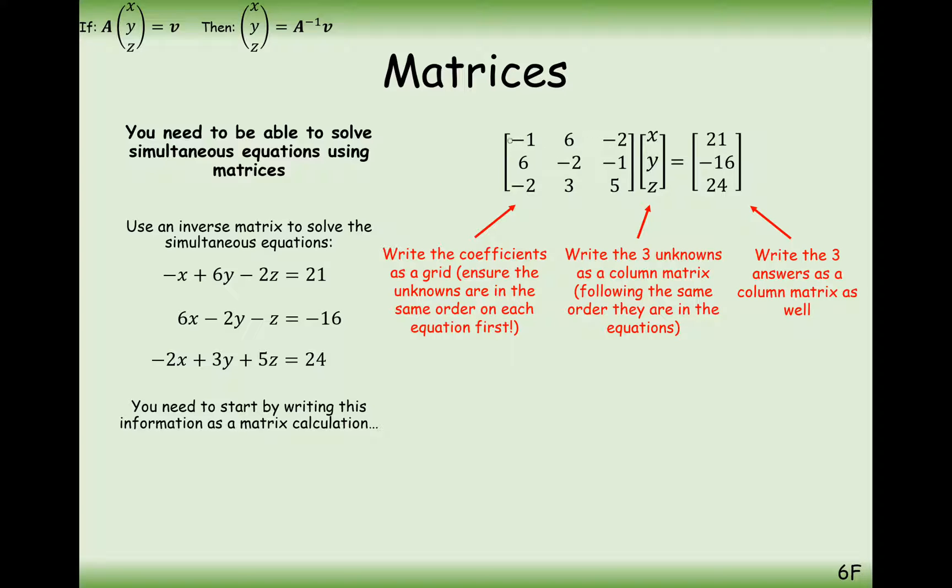Where did this matrix come from? Well, if you see, if we times the top row here by this first column here, what will come out is exactly this equation here: minus x, add 6 times y, add minus 2 times z. So this first row here is effectively the coefficients on this first equation. The second row here, if we multiply out the matrix, would be 6x minus 2y minus z, which is exactly what we have here.